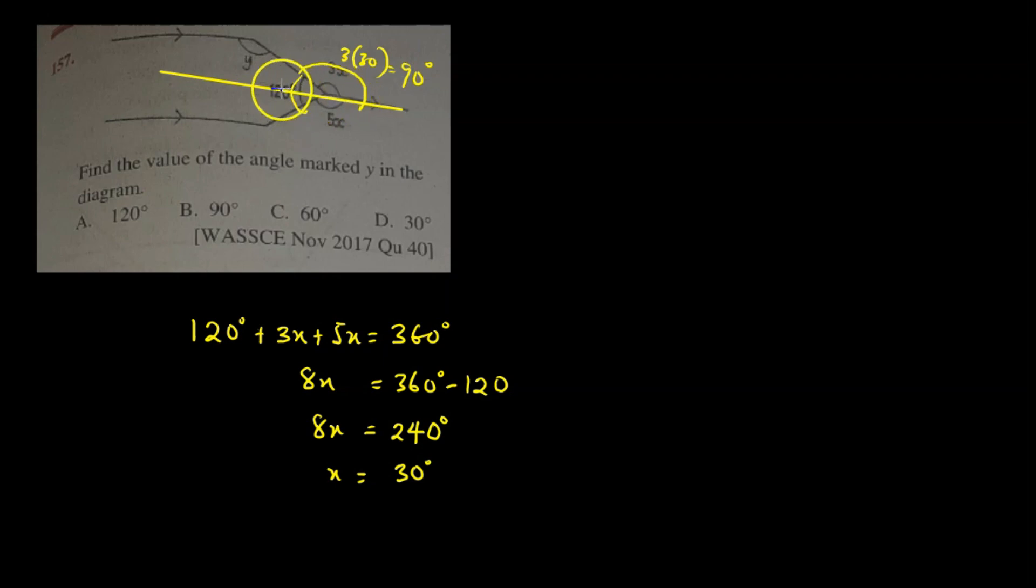But because of the extension we've made, we have a straight line angle there. So if part of it is 90, then the other angle at this corner here will be giving us a value of also 90 degrees, which tells you that we have a straight line angle property being used there.